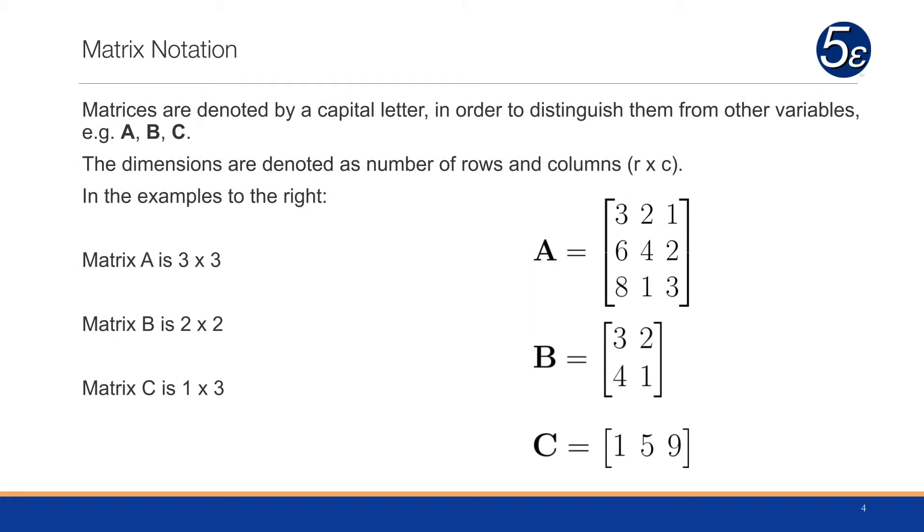In terms of notation, matrices are denoted by a capital letter in order to distinguish them from other variables, and they'll be bold-faced as well. The dimensions of the matrix are always in the form of row by column. Matrix A is a 3 by 3 matrix. Matrix B is a 2 by 2 matrix, two rows, two columns. And matrix C is a 1 by 3 matrix, one row by three columns.